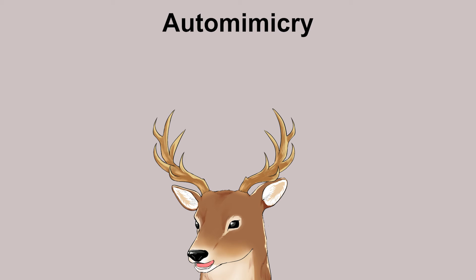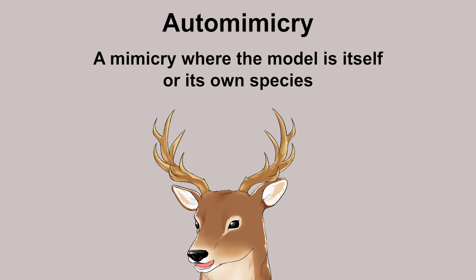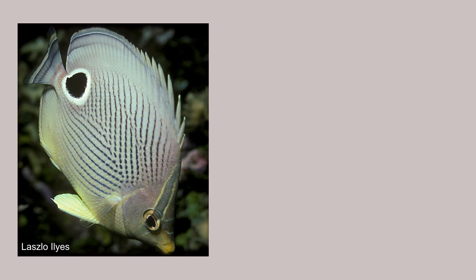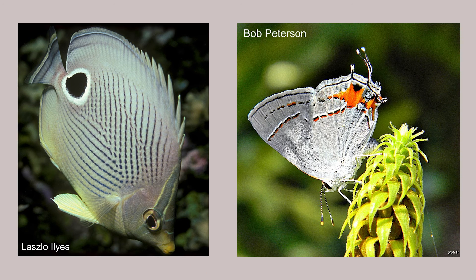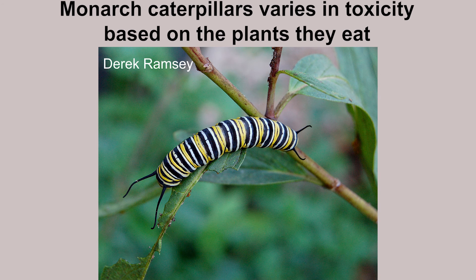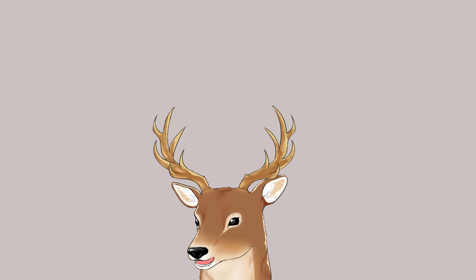Automimicry is the case where the mimic mimics itself — the model is itself or at least its own species. For example, some fish have an eye pattern on their back, and some butterflies have a false head on their back, both misdirecting predators to attack their back and reducing lethal attacks. In Browerian mimicry, some life stages or genders are more dangerous than others, and sometimes they mimic those dangerous stages or genders — it's basically Batesian mimicry but the model is still from the same species.